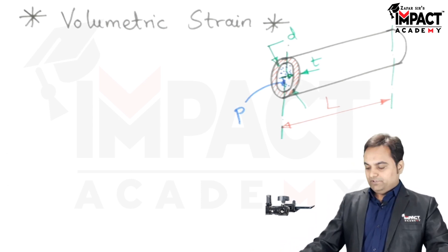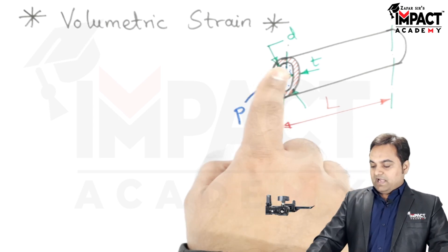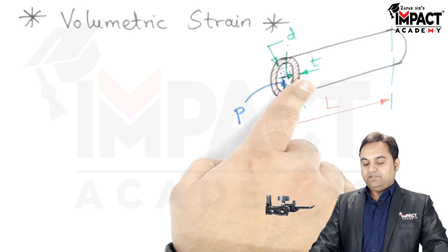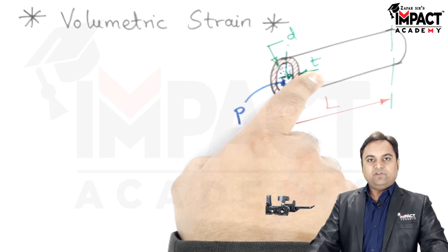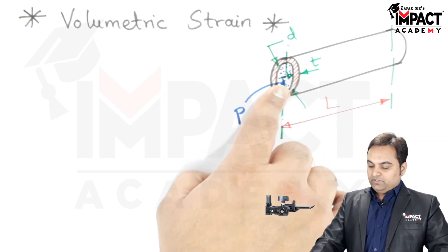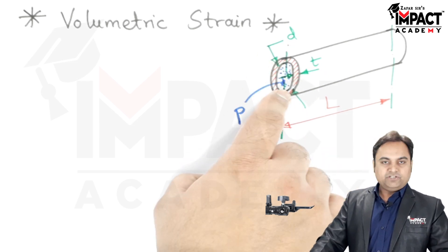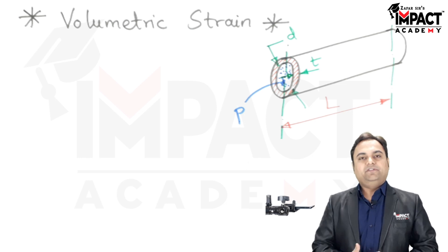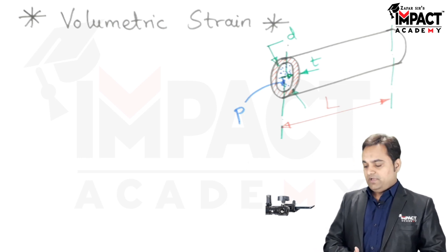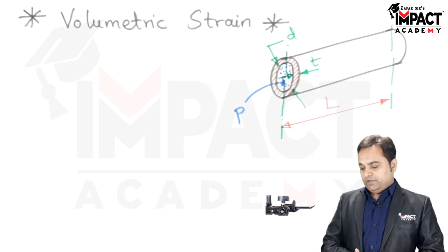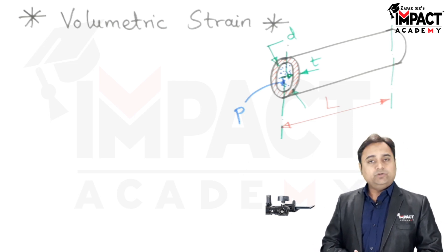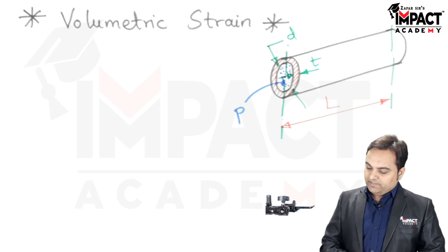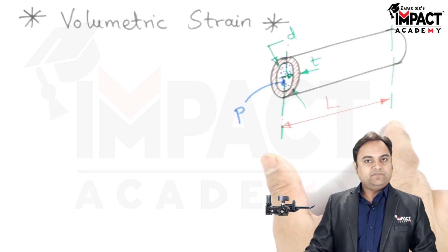Here is a thin cylinder having internal diameter d and thickness t, both in mm. There is an internal pressure due to the fluid stored inside the thin cylinder, having pressure p with units Newton per mm square, and L is the length of this cylinder.